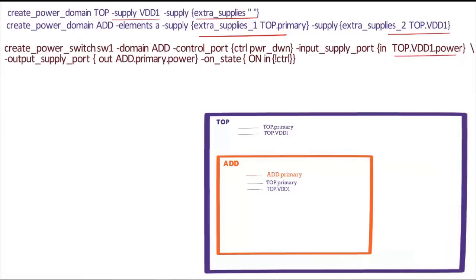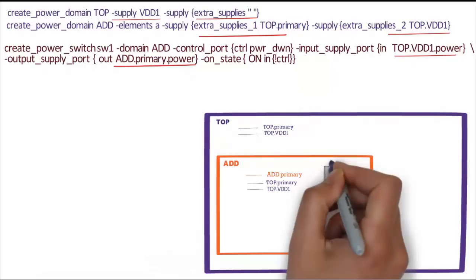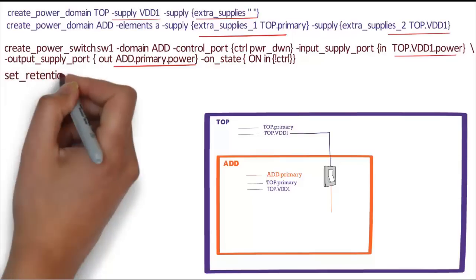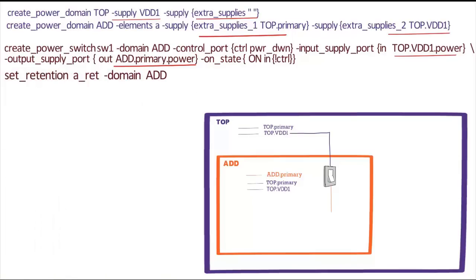We define Power Switch in Domain Add, input connected to Top.VDD1 power and output connected to Add.Primary power. Then we define a Retention Strategy in Domain Add. The Add.Default Retention will be created.